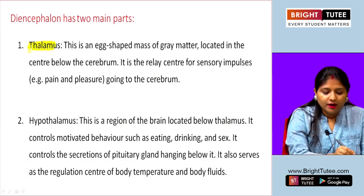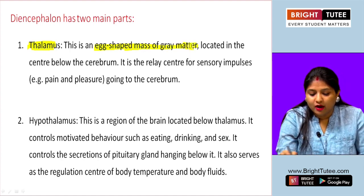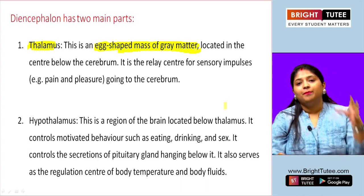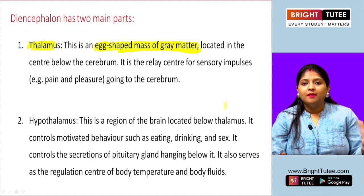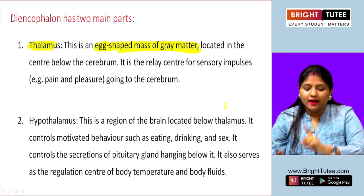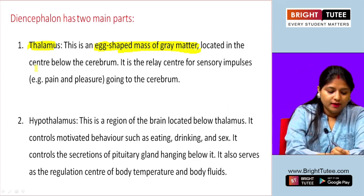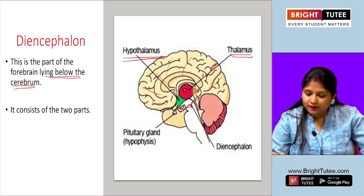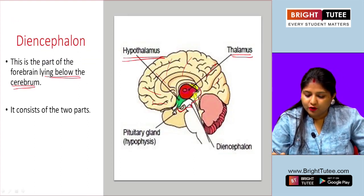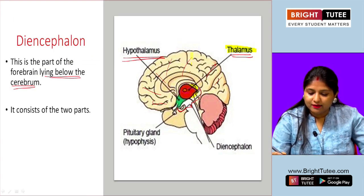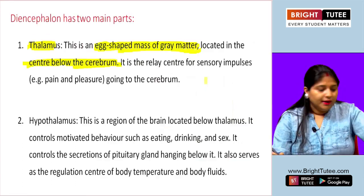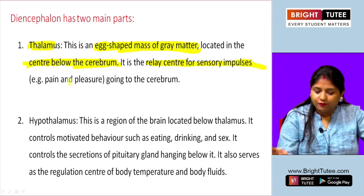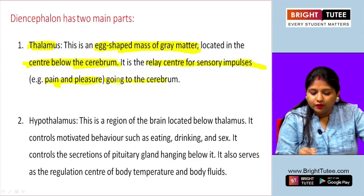The thalamus is an egg-shaped mass of grey matter located in the centre below the cerebrum. It is the relay centre for sensory impulses — for example, pain and pleasure — going to the cerebrum. Whatever information is going to the cerebrum has to pass through the thalamus.